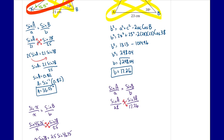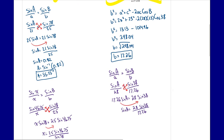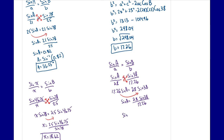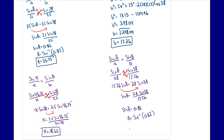Cross multiplying: 17.26 · sine A = 28 · sine 38. Dividing by 17.26 to isolate sine A: sine A = 28 times sine 38 divided by 17.26, which gives sine A = 0.82. Any time we're finding an angle, we use the inverse as the final step: sine⁻¹(0.82) gives us angle A = 55.25 degrees.